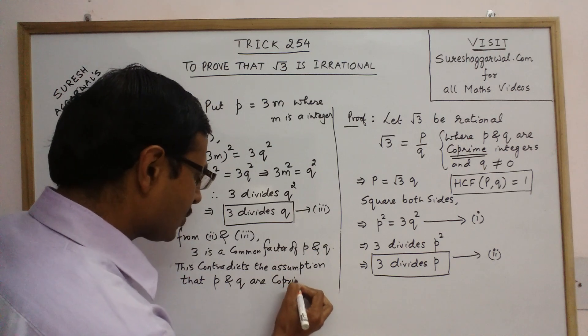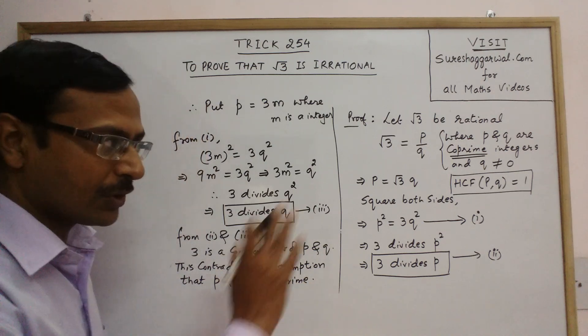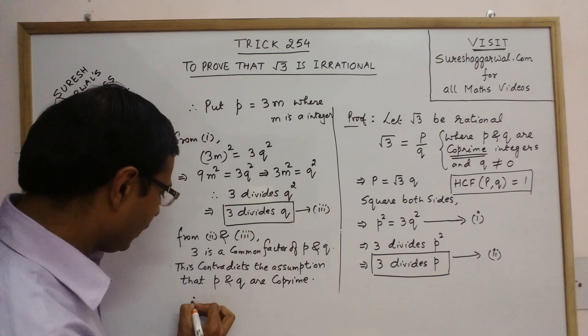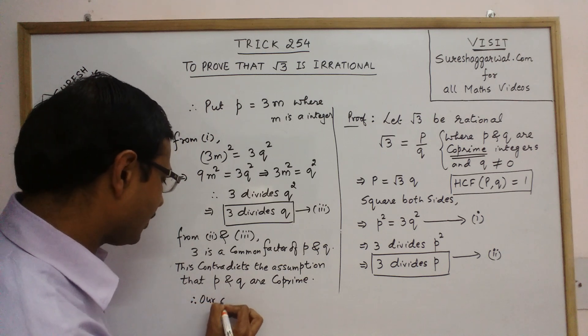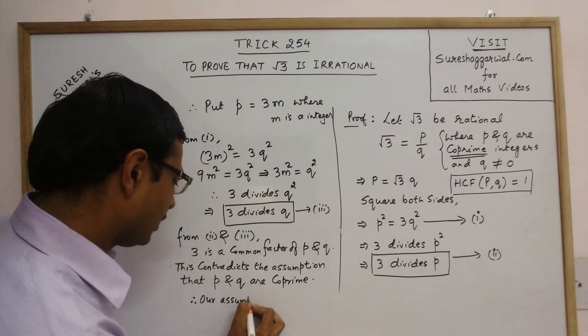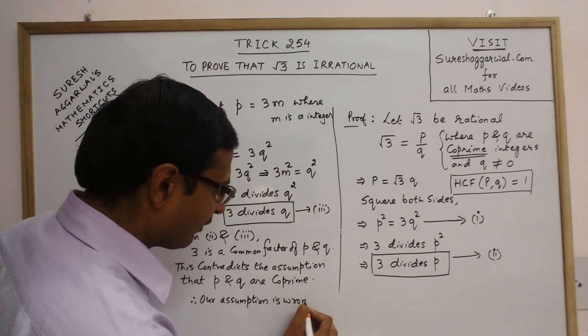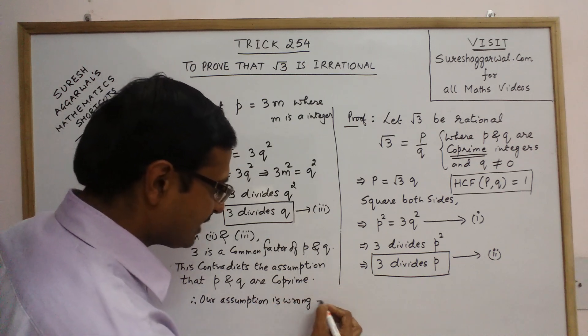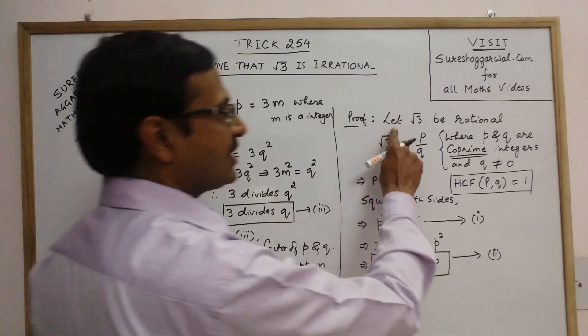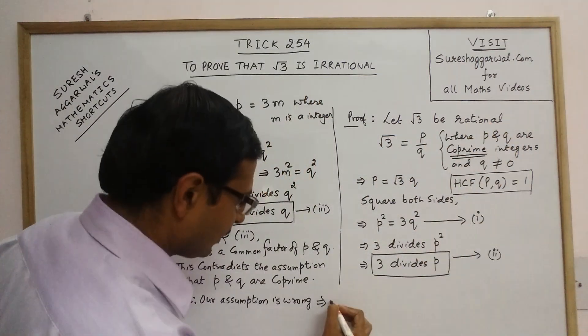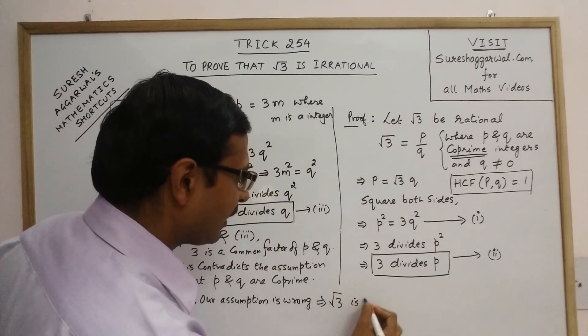So our assumption is wrong. This is a contradiction. Therefore, our assumption is wrong. And whenever our assumption is wrong, we get the reciprocal result. What did we assume? Root 3 is rational. Therefore, root 3 is irrational.